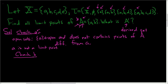Let's check little b. We look at all of the open sets that contain little b. The question is: do they all contain points of A different from little b? And they do — each open set containing little b also contains little a, which is in A and is different from little b. So b is a limit point, because every open set containing little b contains points of A different from little b.